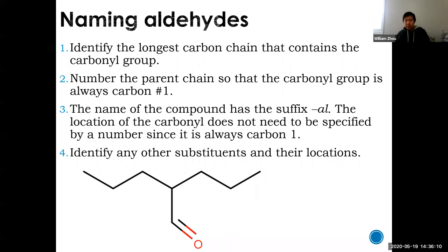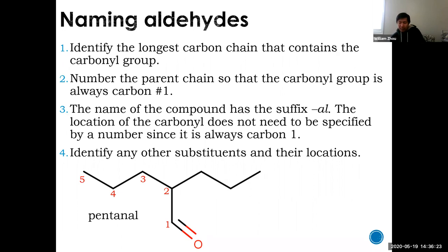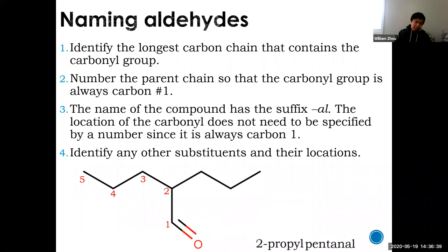For this example, the longest chain is one, two, three, four, five carbons — you must count from the aldehyde because of the rule that it has the smallest number. Five carbons gives pentanal. You don't need the one. There's also a two-propyl substituent on carbon two — three carbons — so putting it together: 2-propylpentanal.